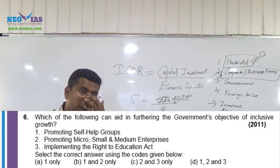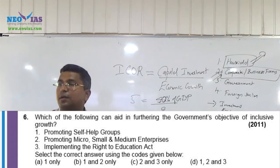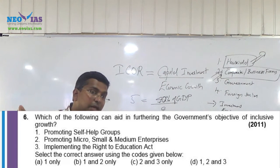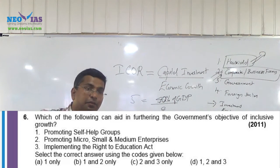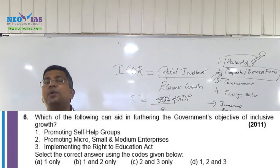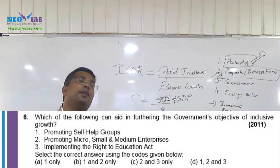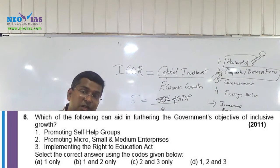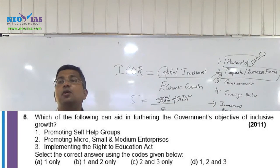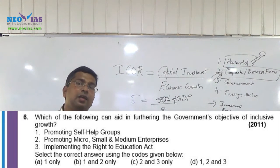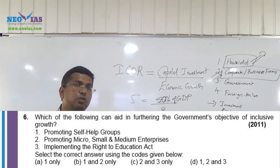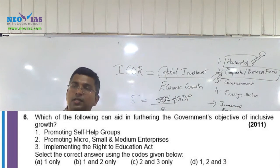The majority of the people are dependent on agriculture in India. Even though agriculture's contribution to GDP is 17 percent or less, nearly half of the population is dependent on agriculture. If agriculture is not growing, it will affect their livelihood, so we need to ensure the agriculture sector is being promoted — that's why the government is giving so many schemes for the agriculture sector.